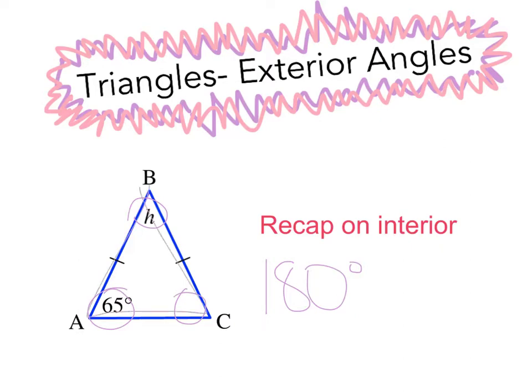So we worked out that this was an isosceles triangle. We know that based on the annotations. And then we know if this is an isosceles triangle, opposite angles to the equal sides are also equal. So if that's 65, this guy's also going to be 65. In order to work out H, we simply go 180 minus 130, which is going to give us 50. So that was interior angles.